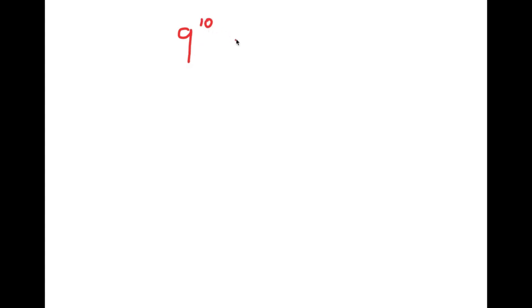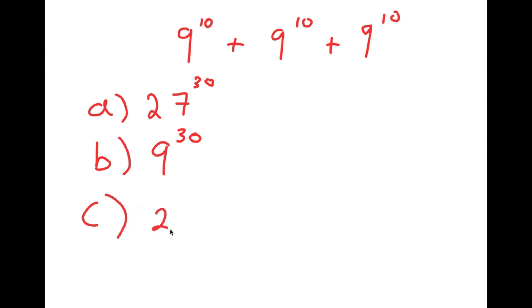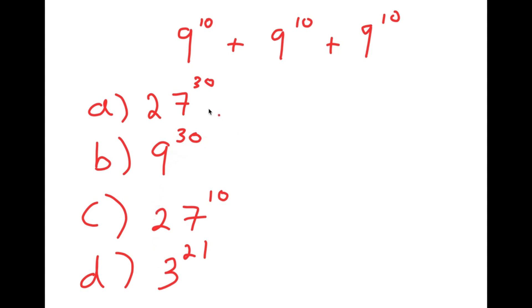In this video, I'm going to be solving the problem 9 to the power of 10 plus 9 to the power of 10 plus 9 to the power of 10. For this problem, I have four option choices: A) 27 to the power of 30, B) 9 to the power of 30, C) 27 to the power of 10, and D) 3 to the power of 21. Let's go through all these choices and see which is right.